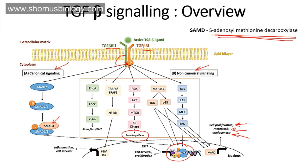Similarly, activated TGF beta receptor type 1 signals through the MAP kinase pathway by activating RAS, RAS activates RAP, RAP activates MAP kinase, which activates ERK. ERK then activates transcription factors including Jun and FOS, which enter the nucleus and activate desired genes, causing the cell to divide, grow, and proliferate, and converting a normal cell into one with metastatic and angiogenic properties.